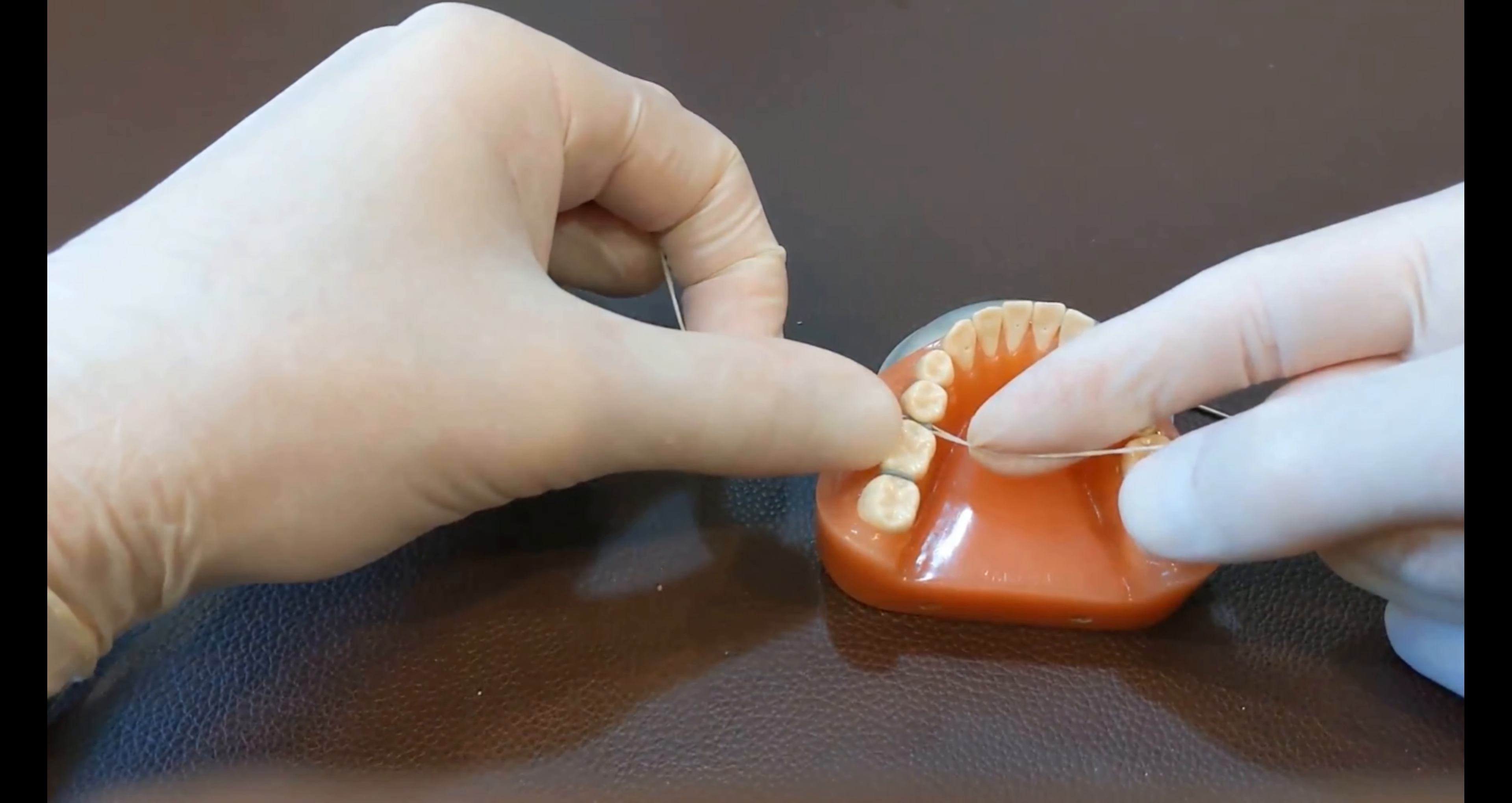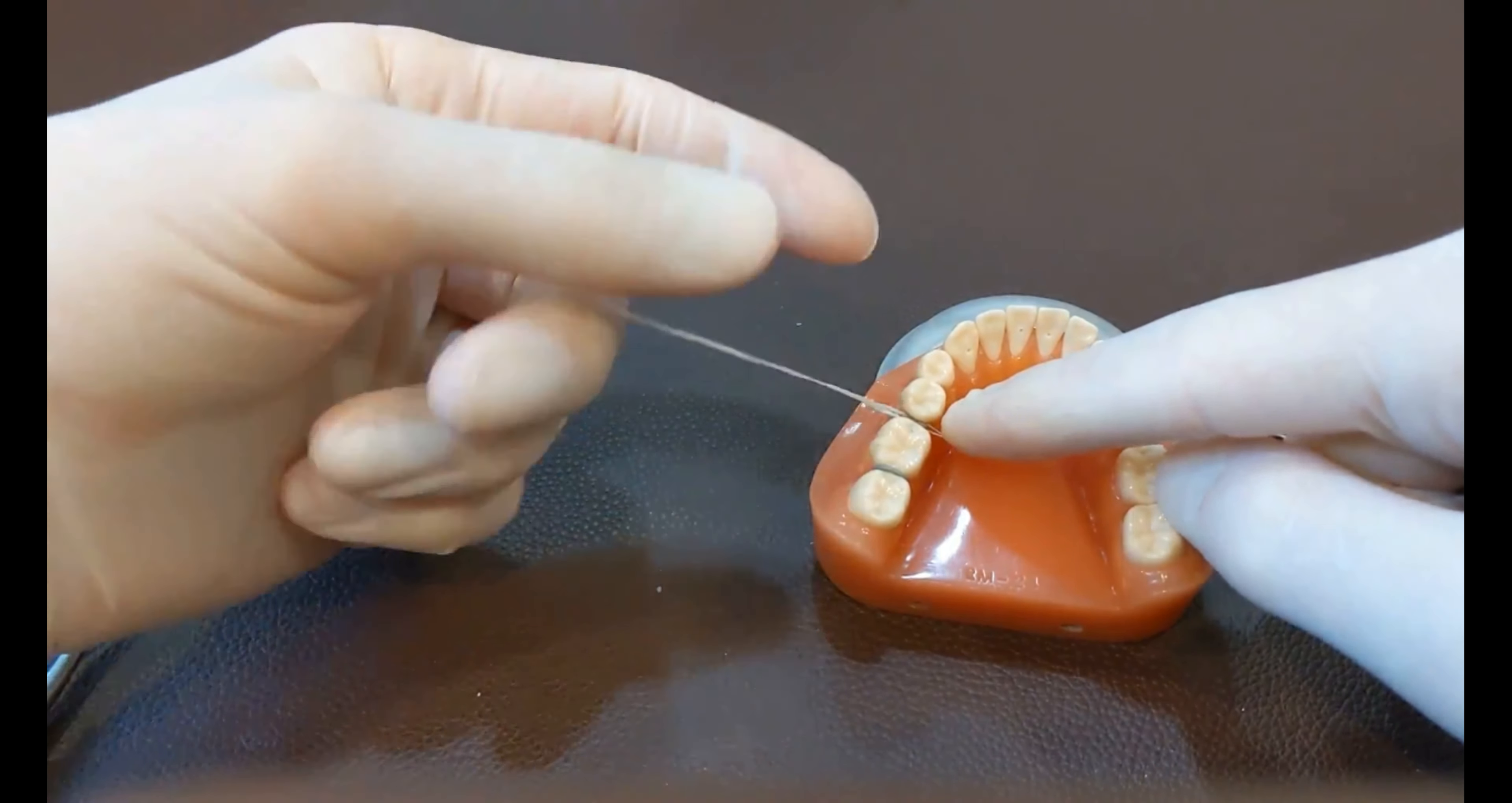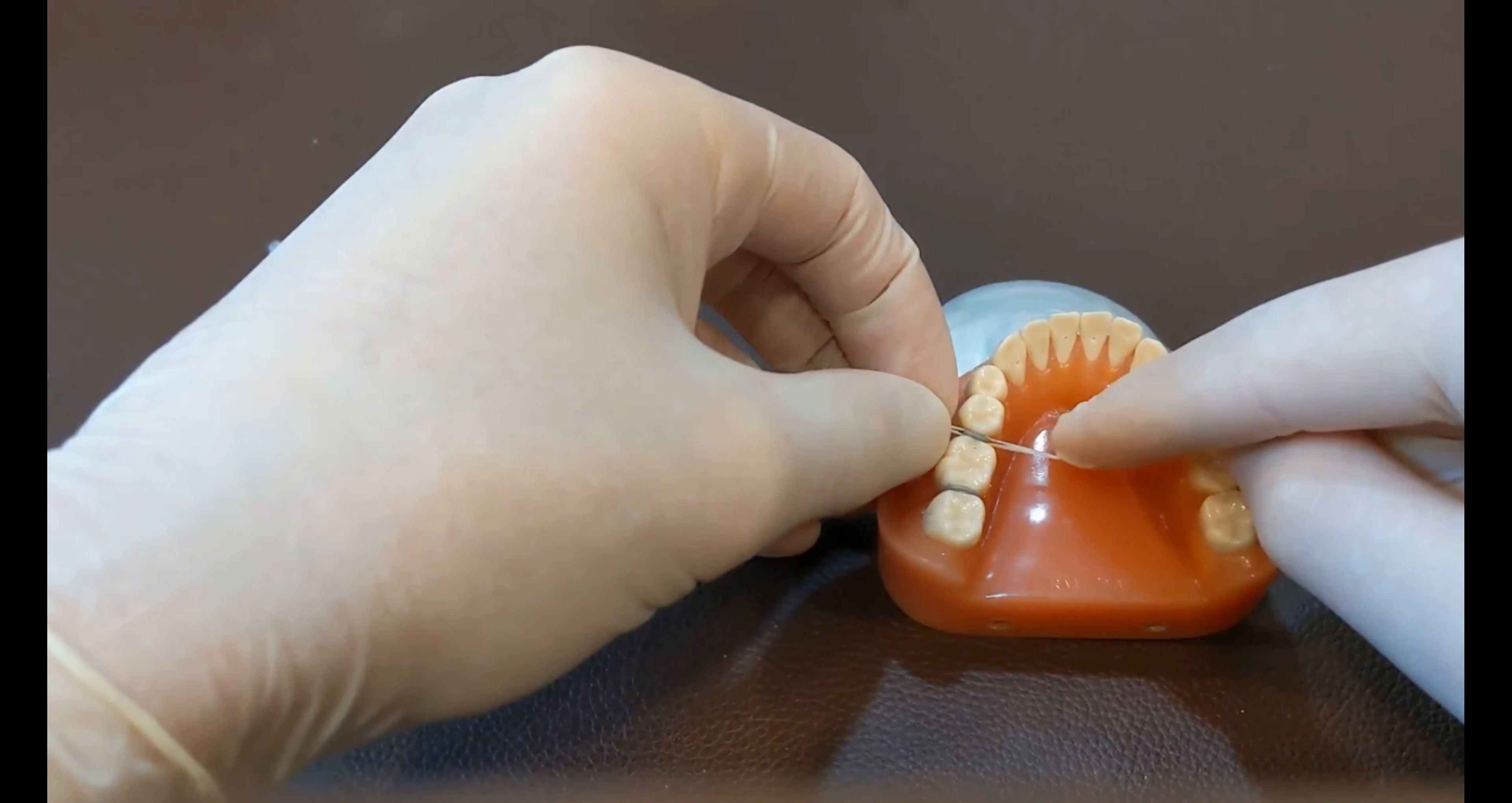And then you gently kind of wiggle it back and forth, and raise it up. See, both halves came out. So I gotta seat the floss back in there, pull it down halfway through, and then kind of gently raise it up until just one of those halves comes up above the contact, and the other half stays down below.